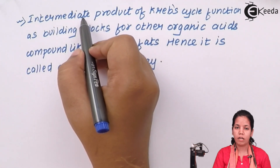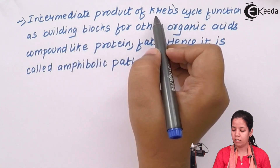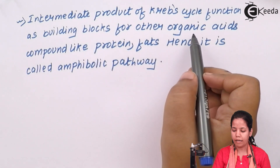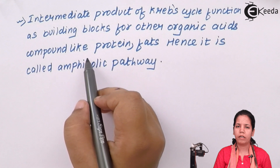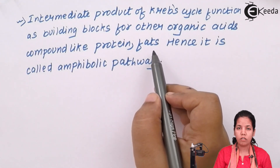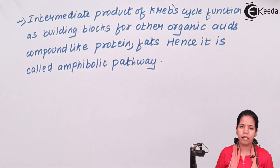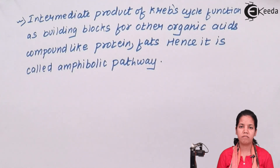The intermediate products formed within the Krebs cycle — such as succinyl CoA, oxaloacetic acid, and acetyl CoA — act as building blocks for the formation of other organic acids. They can serve as raw material to form long-chain proteins such as polypeptides, and saturated or unsaturated fats can use some of these molecules to form their building blocks. Hence Krebs cycle is known as an amphibolic pathway, since all three varieties — carbohydrates, fats, and lipids — can enter and be broken down into simpler organic compounds.